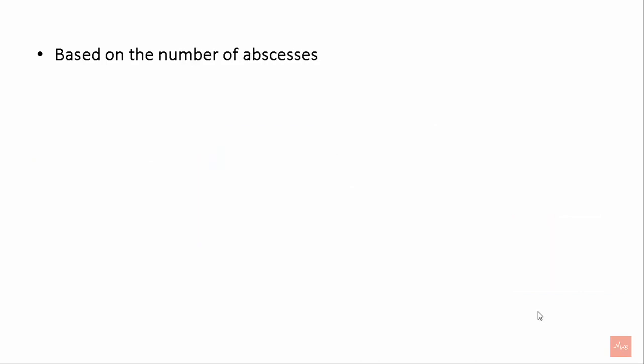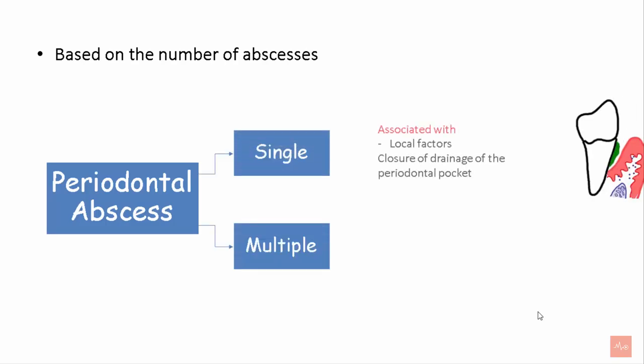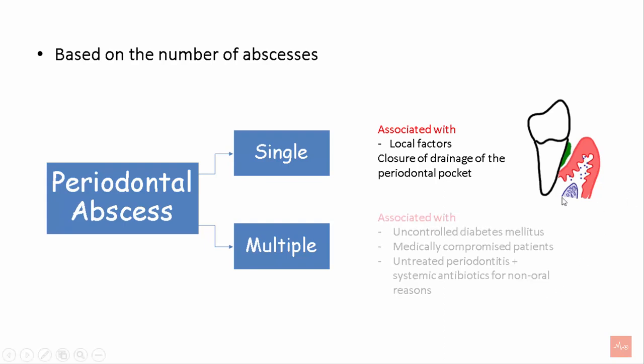Based on the number of abscesses, periodontal abscesses can be classified as single or multiple. Single periodontal abscesses are associated with local factors like plaque and calculus and occur due to closure of drainage of the periodontal pocket. Multiple periodontal abscesses are generally associated with uncontrolled diabetes mellitus, medically compromised patients, untreated periodontitis, and systemic antibiotics taken for non-oral reasons.